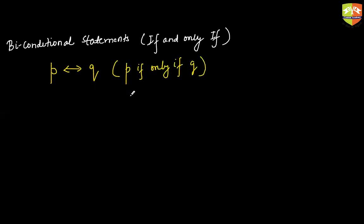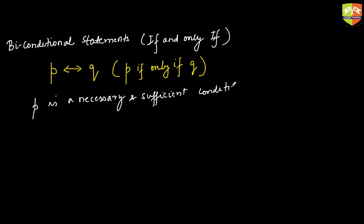That means p is both the sufficient as well as the necessary condition for q and vice versa. So you can also read it as p is a necessary and sufficient condition for q and vice versa.